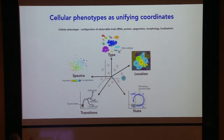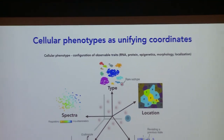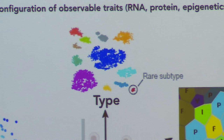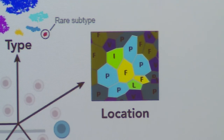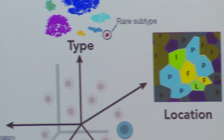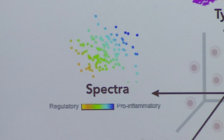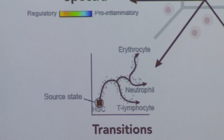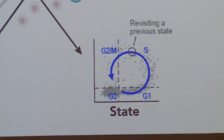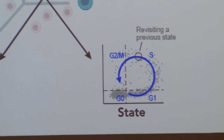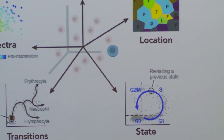We can look at cellular phenotypes as a coordinate system. The molecular fingerprint tells us about the cell types — we can cluster them and identify very rare ones. We can quantify locations and computationally relate cells to each other on a spectrum of activation and in transitions that are so beautifully presented here in terms of hematopoiesis. Cyclic processes like cell states, circadian patterns, and so on can also be computationally captured through pseudotime inference from single-cell data.